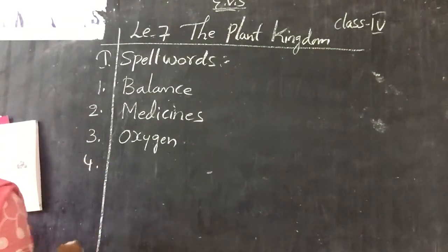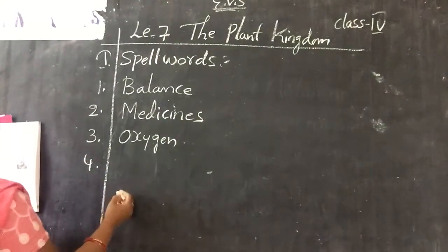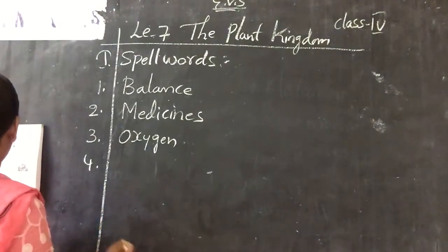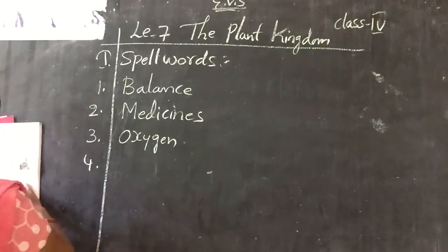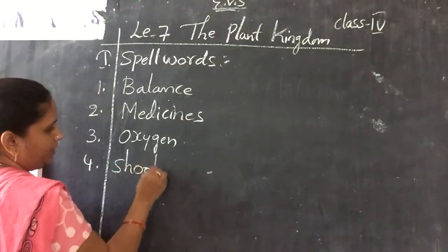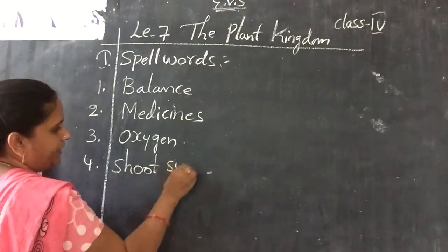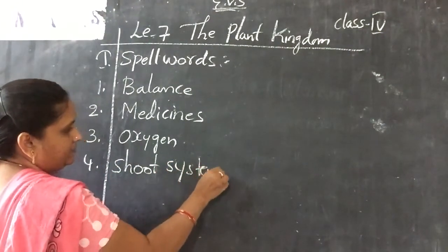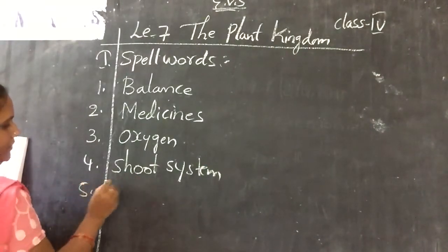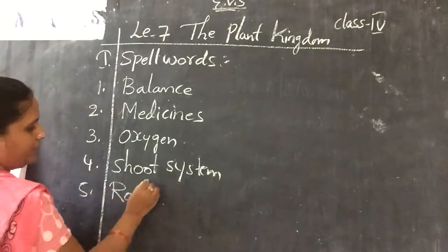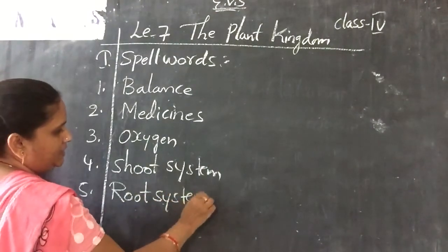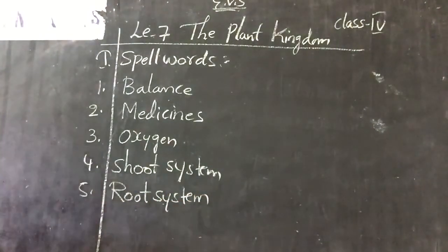Fourth one: shoot system — S-H-O-O-T, shoot; S-Y-S-T-E-M, system — shoot system. Fifth one: root system — R-O-O-T, root; S-Y-S-T-E-M, system — root system.